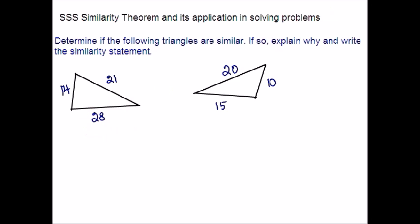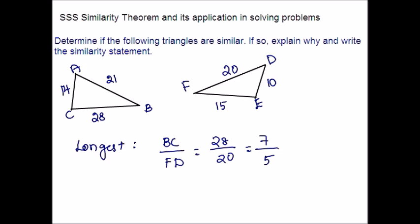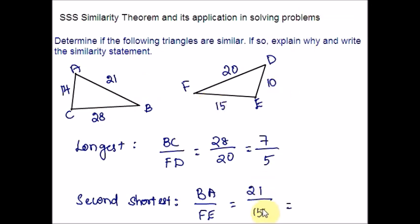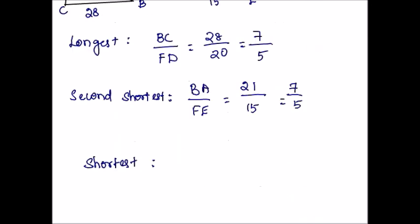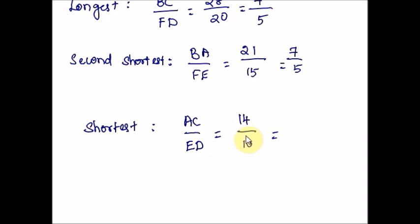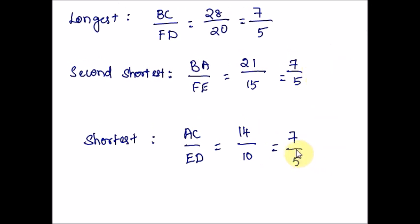Let me name the triangles as ABC and EDF. The longest sides are 28 and 20. Reducing the fraction gives 7 over 5. Now the second shortest sides: BA and FE, which are 21 and 15. These two numbers can be reduced by 3 — 7 threes are 21 and 5 threes are 15 — giving 7 over 5 again. The shortest sides: AC over ED, measurements 14 over 10. Reduced by 2 gives 7 over 5. All three ratios are the same, so triangle ABC is similar to triangle EDF by side-side-side similarity theorem.